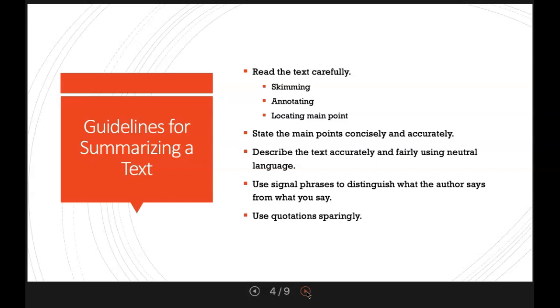You can describe in writing the text very accurately and fairly by using neutral language. You don't want to use biased language. You can use signal phrases to distinguish what the author says from what you say. And you want to use your quotations sparingly. You don't want to just copy and paste a whole segment and consider that a summary. That's not a summary.